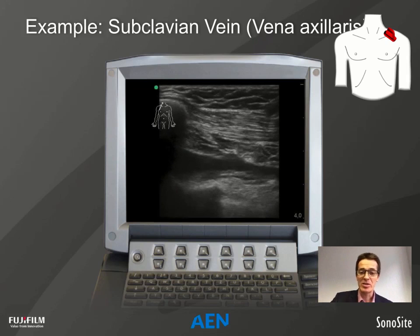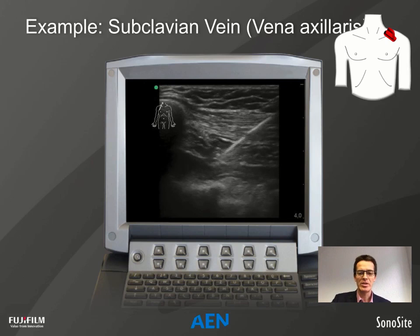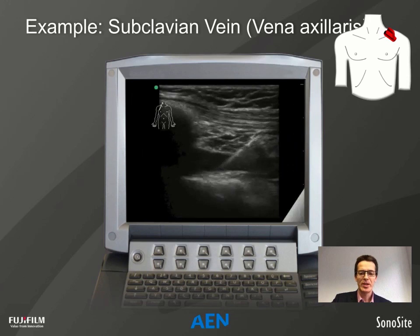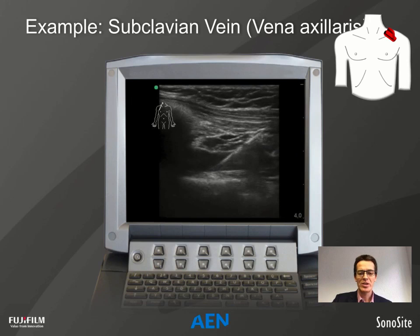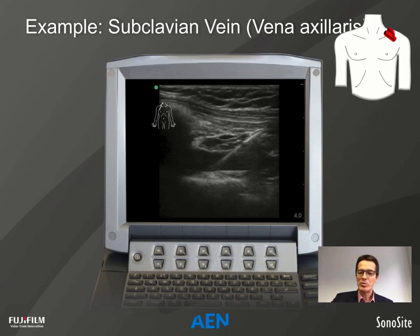We take an echogenic needle because of the steep angle, directing it toward the first rib as an additional safety feature against pneumothorax. Here you can see the guide wire placed directly into the vessel. Some experienced users pre-position the guide wire inside the needle, then place the needle tip inside the vessel under direct vision and insert the guide wire directly. This is quite smart, but only for experienced users.